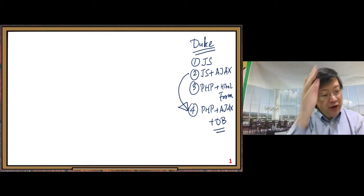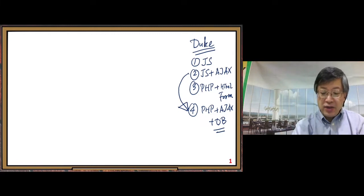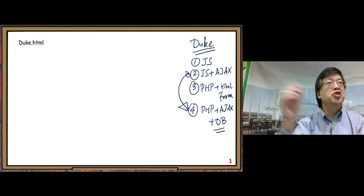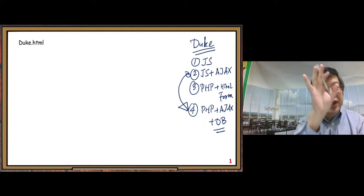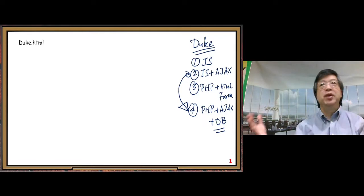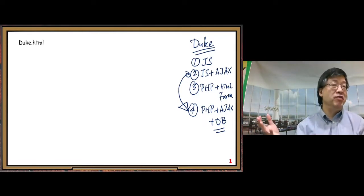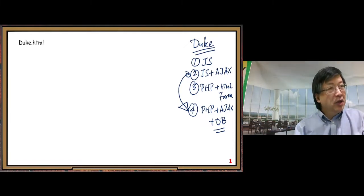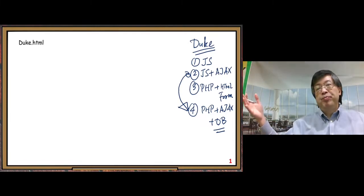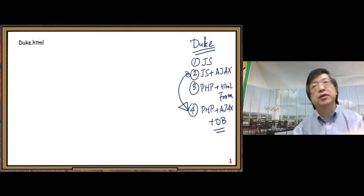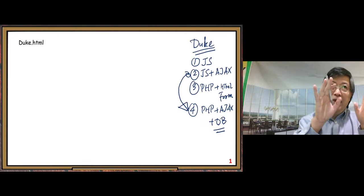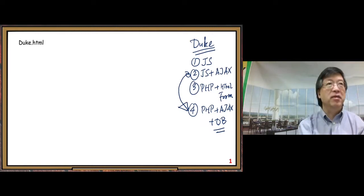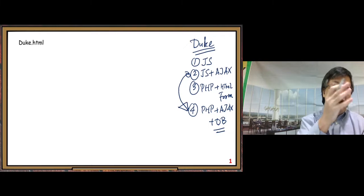For the first program, I just copy from version 2 — Duke.html. I copy that file because in this one, we do not need to use the PHP feature. So Duke.html only uses JavaScript in it. We don't need PHP, so that's why I do not use the Duke.php file name — I still use Duke.html.